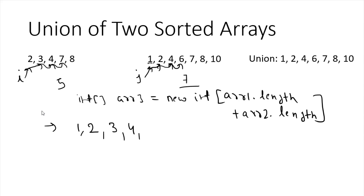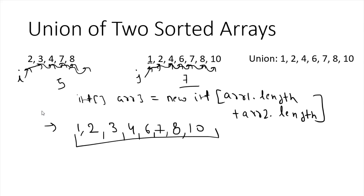Continuing — we put 6, increase j, then at 7 and 7 both match so we put 7 and increase both i and j. Again 8 and 8 both match, so put 8 and increase both by 1. We have completed the full iteration of the first array but j still has remaining elements. So whatever remaining elements are in j, we put them into our new array — in this case, 10. This gives us our union array.